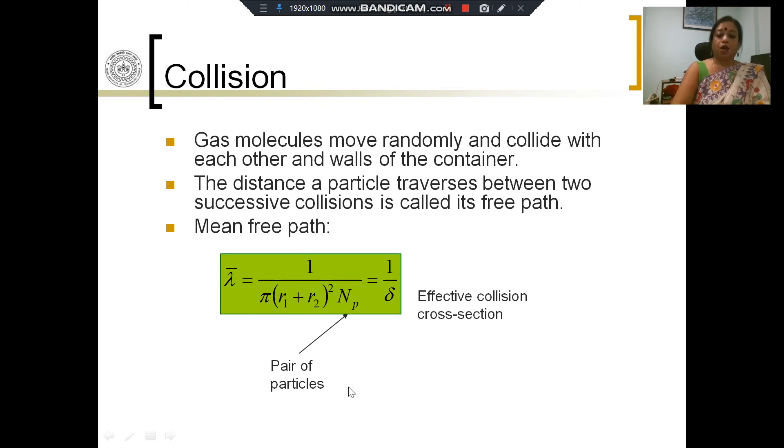We can talk of a mean free path λ̄ which is given by 1 divided by π(R₁ + R₂)² times Np.